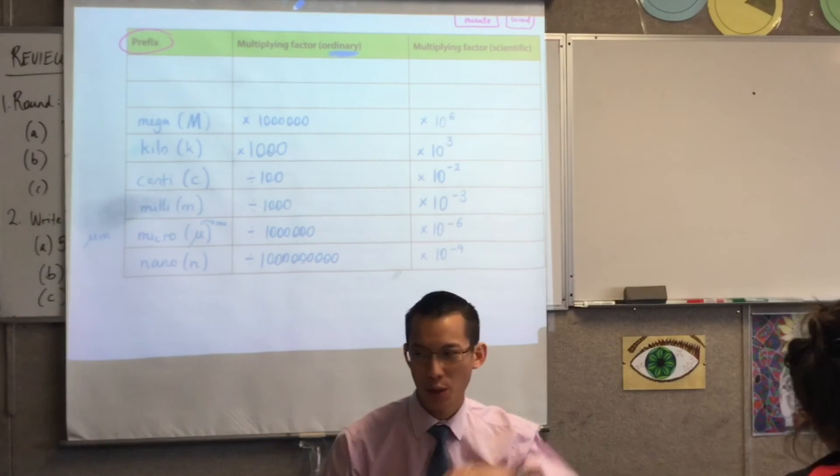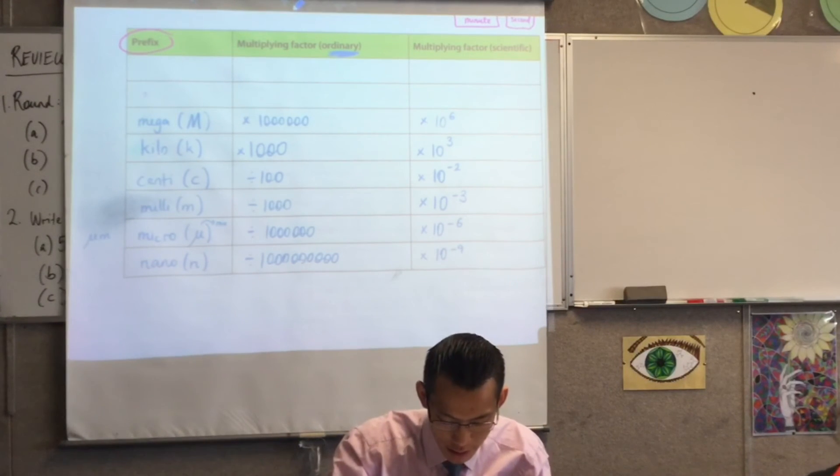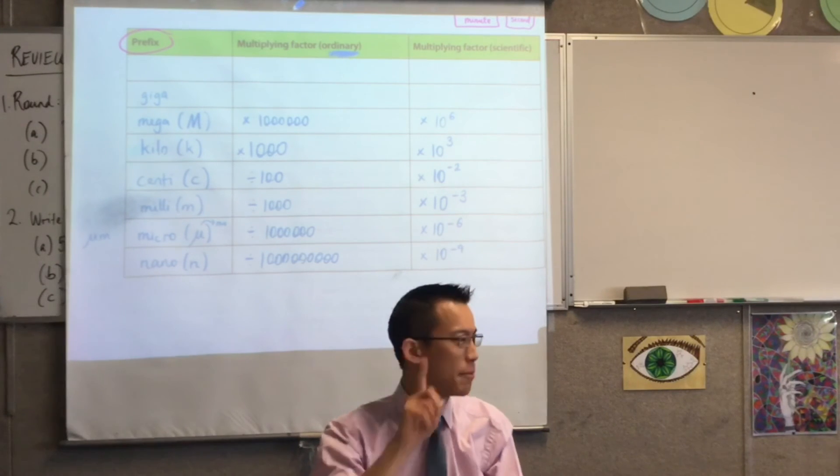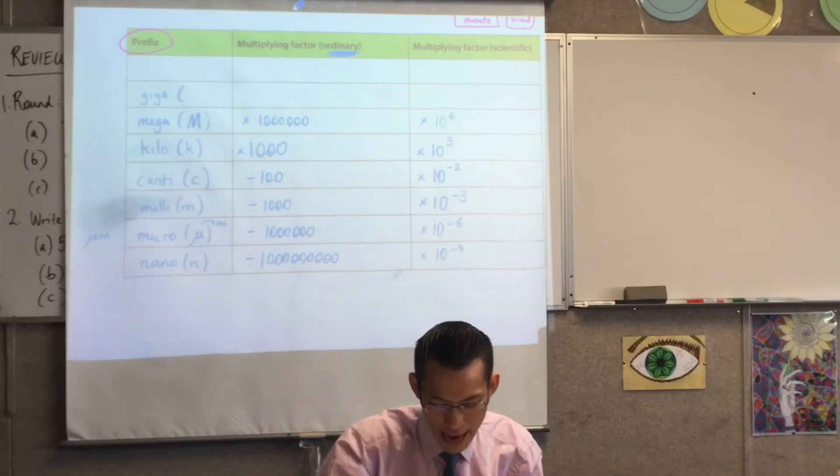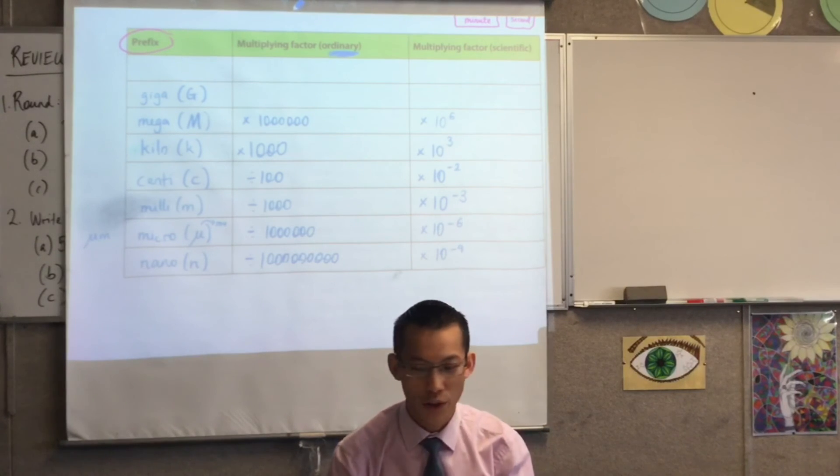After megabytes, I'm now sort of going into data, which we're going to look at later in more detail, but... Yeah, good. So, giga? I suppose it's the closest. Now, again, because we're getting bigger, they actually use a capital G, even though there's nothing else that's there. So, capital G.